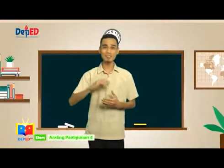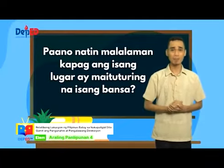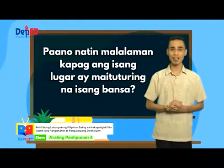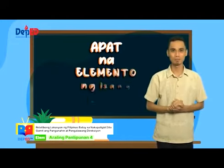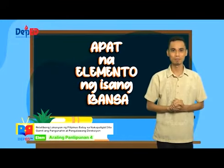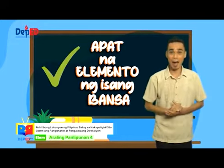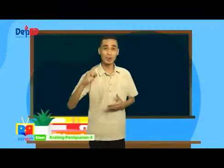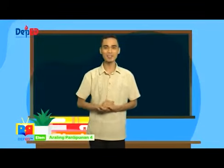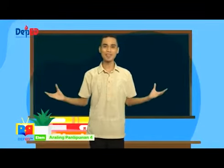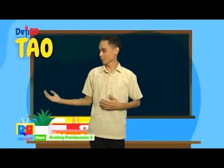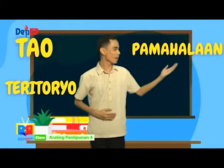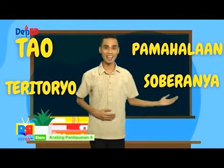Magbalik-aaral muna tayo. Paano nga natin malalaman kapag ang isang lugar ay maituturing na bansa? Kailangan meron itong apat na elemento. Ano-ano nga ang mga ito? Elemento ng bansa: tao, teritoryo, pamahalaan, at sobiranya.